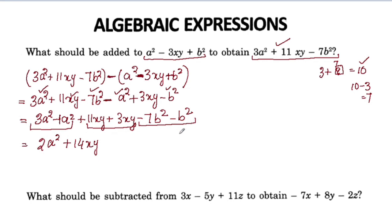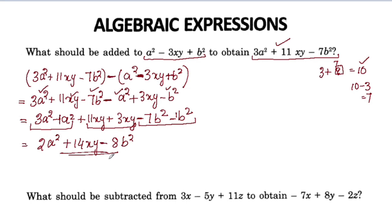Minus b²: negative negative gives us 7 plus 1 equals 8b². So the final answer is 2a² + 14xy - 8b².